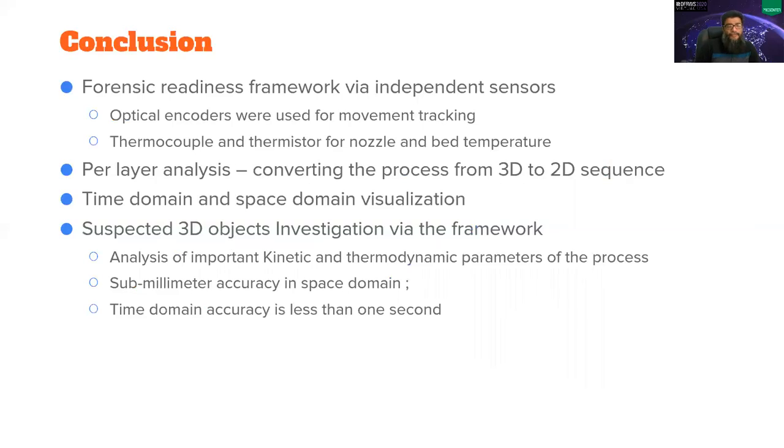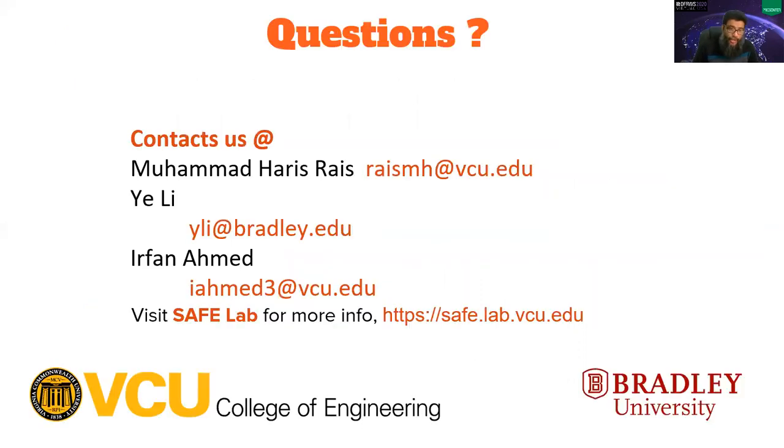To summarize, we prepared a forensic readiness framework using independent sensors, optical encoders for movement, and thermistor thermocouple for temperature measurement. We did per layer analysis. We did multi-domain analysis and the accuracy was like for the space domain, we found it to be submillimeter accurate and it's less than one second accuracy for the time domain. So thank you. Thank you very much. If you have any questions, please feel free.